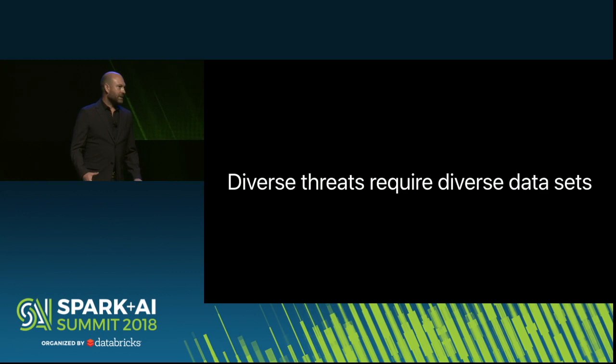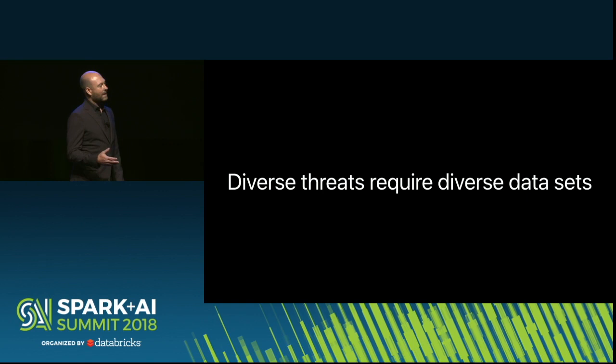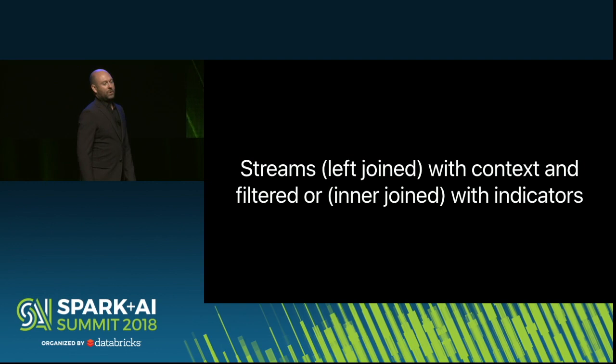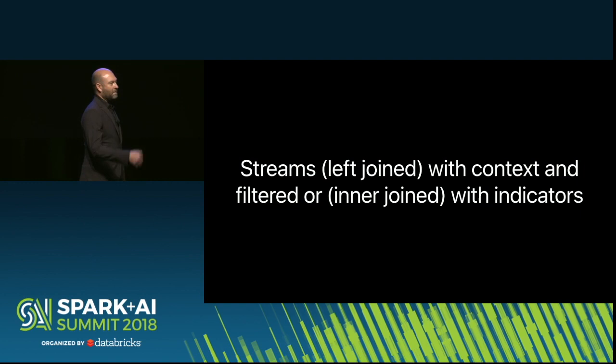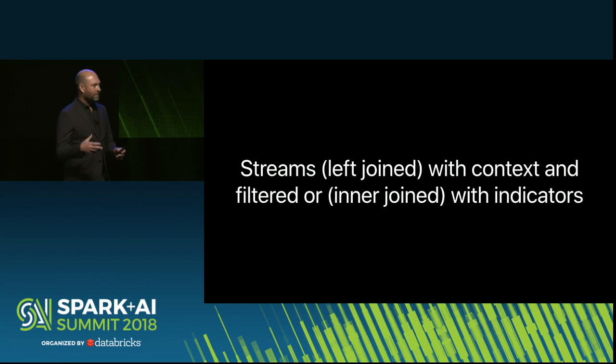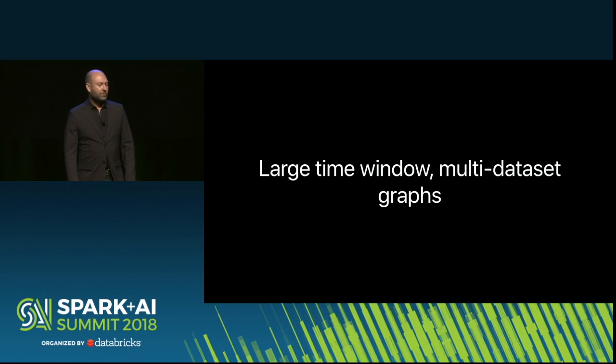So what does it take to enable detection and analytics? We actually have to deal with a super diverse set of threats that require a diverse set of data. What can happen is signal can show up and it can be strong or weak, it can be in one data set or spread across many, and it can be close in time or as far as months apart. We get pretty far with a simple pattern: take some data stream, left join it with context, and then filter or inner join it with something like indicators of compromise — certain facets of an event. These are things you can detect in a single event or a couple of events joined together with context.